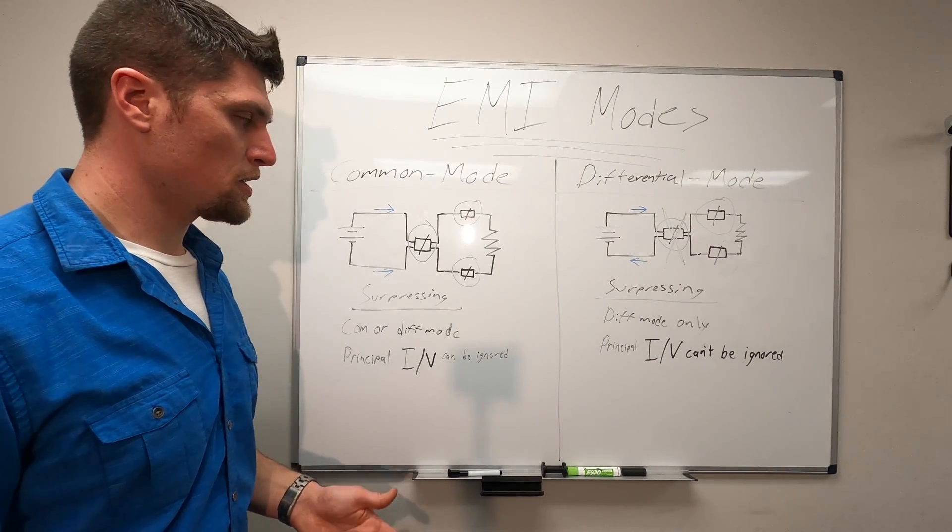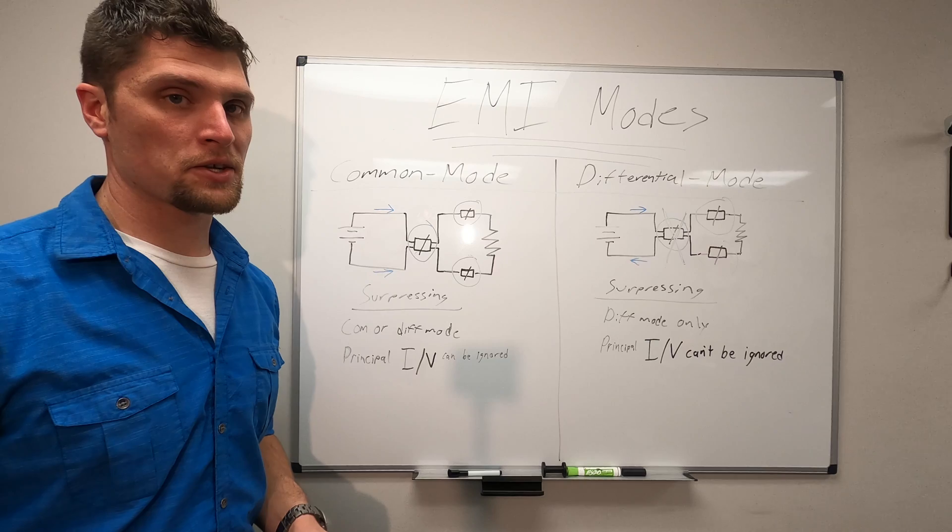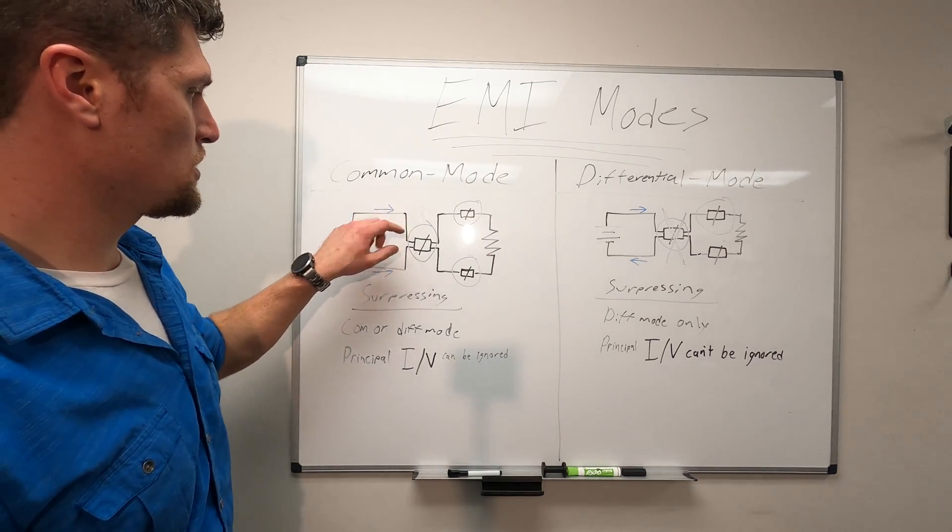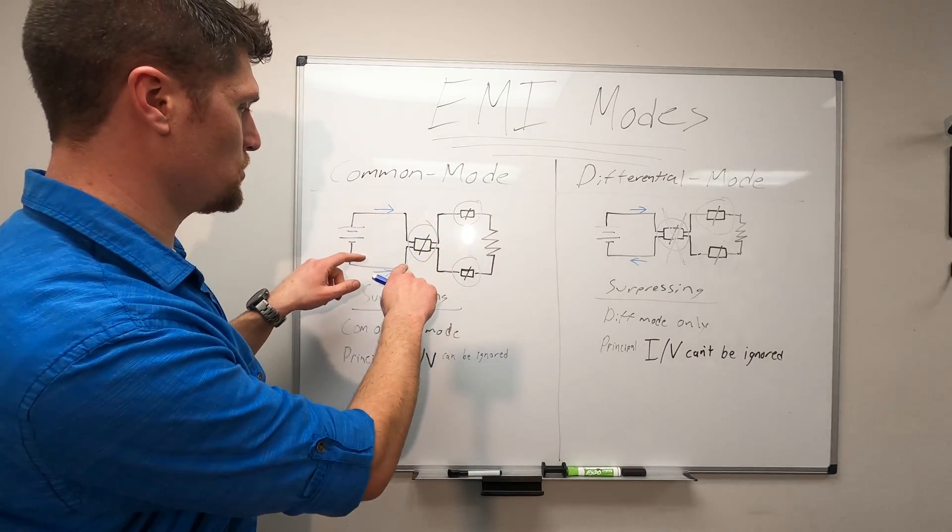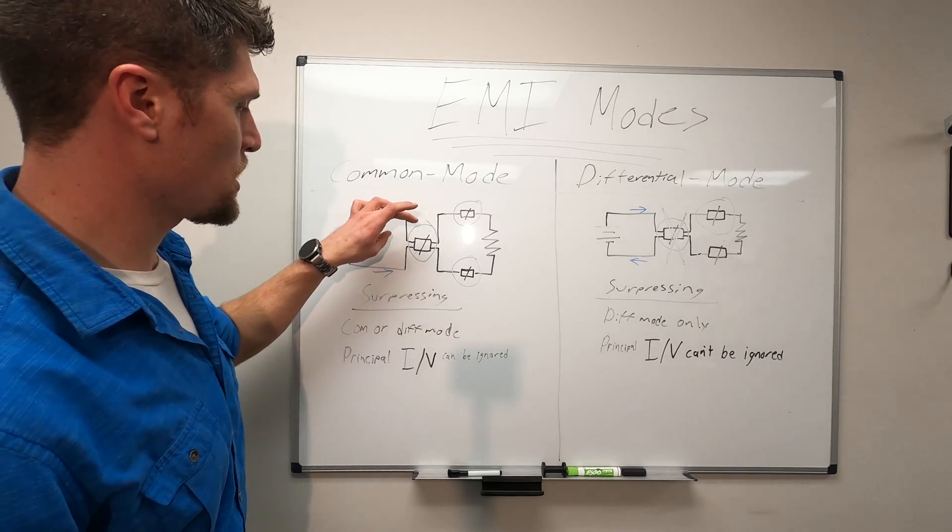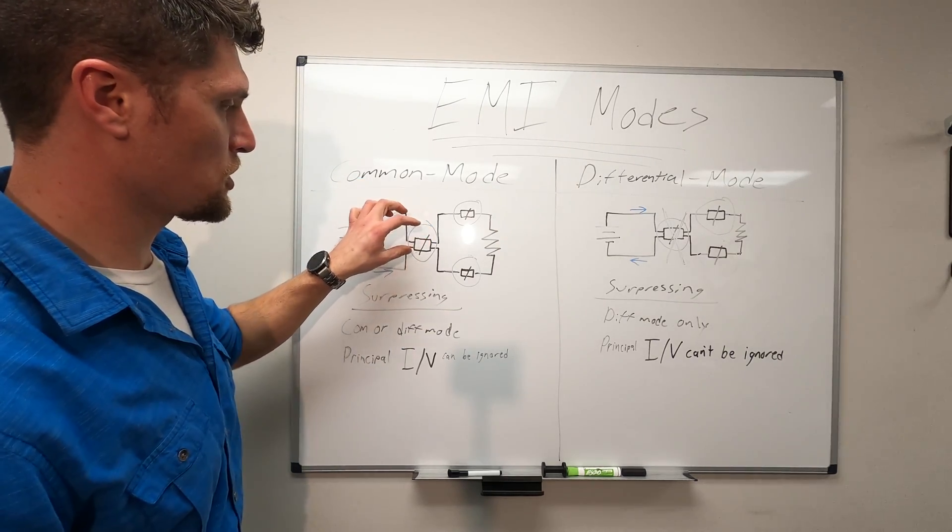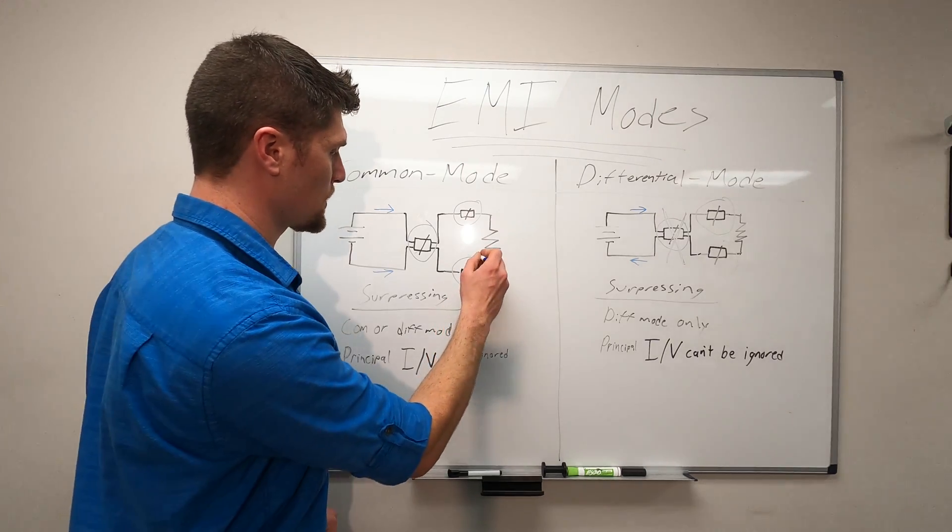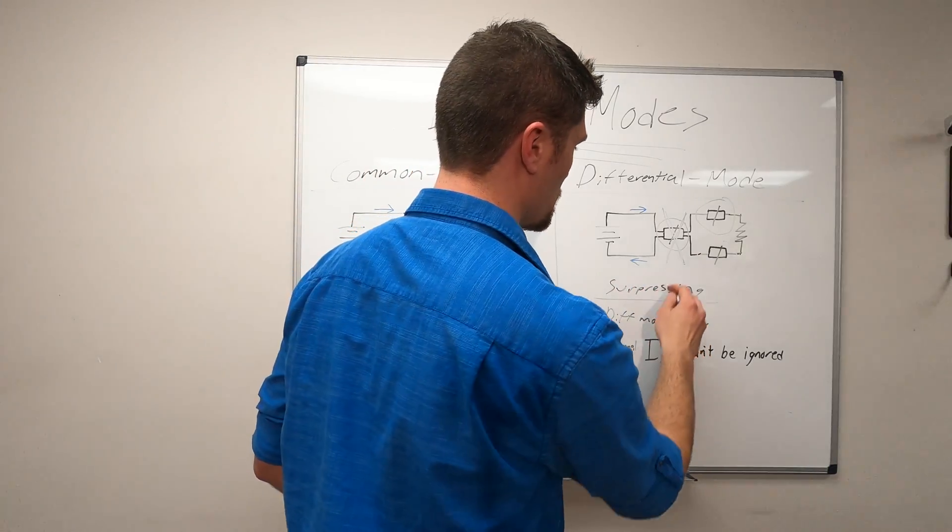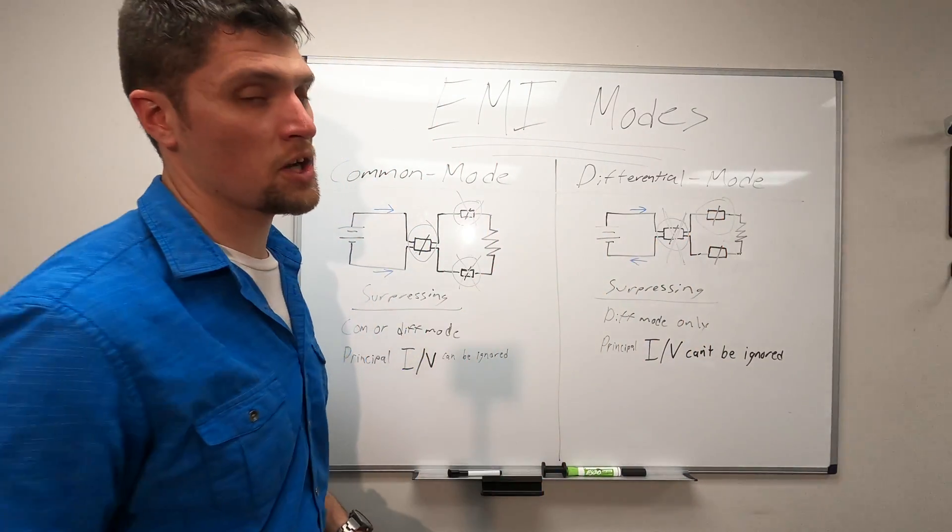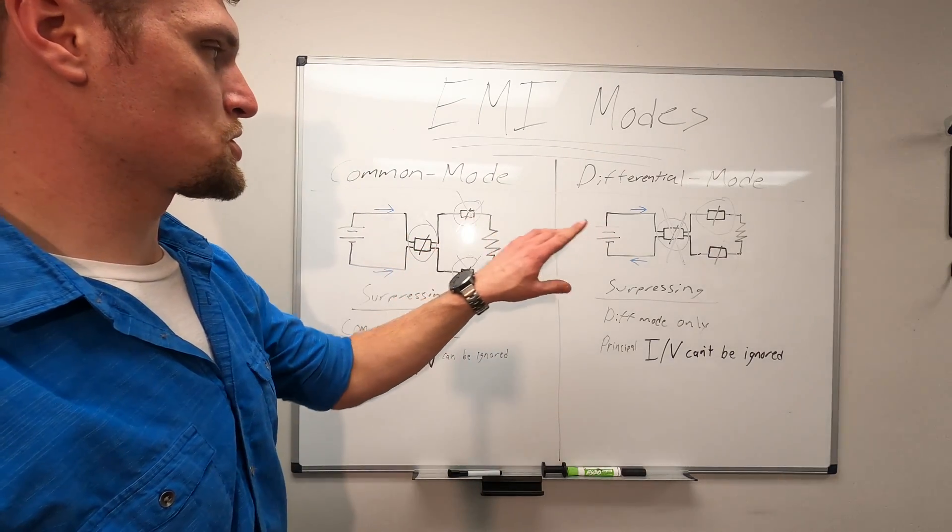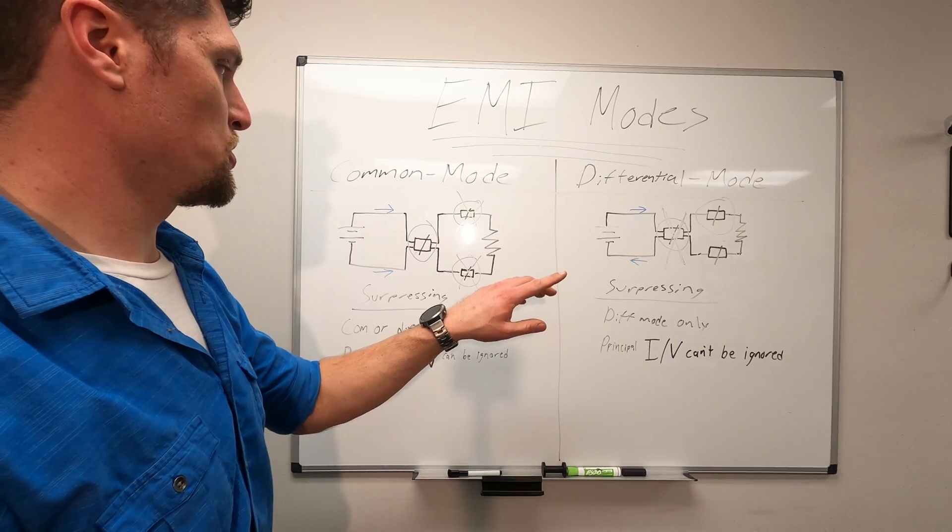We won't go into it in this video, but there are other factors that need to be considered. Not so much with common mode, as our principal signal currents and voltages that we are not trying to suppress have no effect on a common mode core, but they will affect differential mode cores potentially in both differential mode and common mode applications. So those have to be considered when working with differential mode suppression.